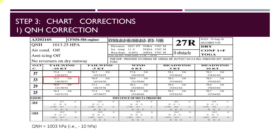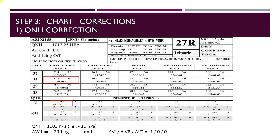The third step is the chart corrections, and the first correction is the QNH correction. In our example the QNH is 1003 hPa, but the chart has been published for QNH 1013 hPa, so there is a difference of 10 hPa. Going down on the column of 10 knots tailwind, for a delta QNH of minus 10, the corrections are minus 0.7 tons for weight and minus 1, 0, and 0 for the V speeds. Note that we are taking corrections from lines 1 and 2, not lines 3 and 4, because our OAT is below the T-VMC of +79 degrees shown in the shaded region. We call this delta W1 = minus 700 kg, and delta V1, delta VR, delta V2 as minus 1, 0, and 0.